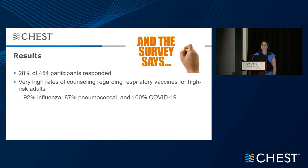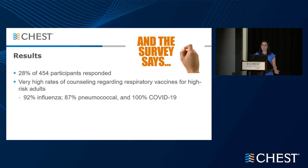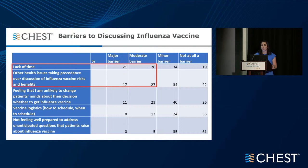We received about a 30% response rate, which in survey research is not too bad. One of the most significant findings was that almost all providers talked to their high-risk patients about respiratory vaccination: 100% talked about COVID vaccination, 92% about influenza, and 87% about pneumococcal vaccines. The primary barriers providers felt were lack of time and other health issues taking precedent over vaccine discussions, as well as feeling that once someone made up their mind, they wouldn't be able to change it.